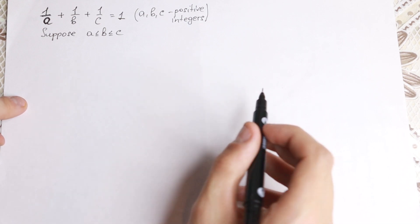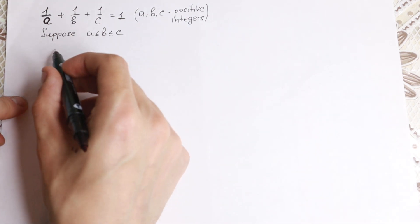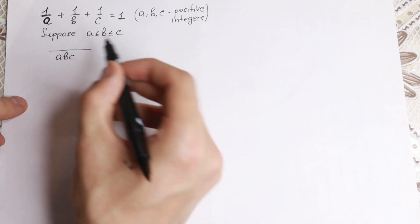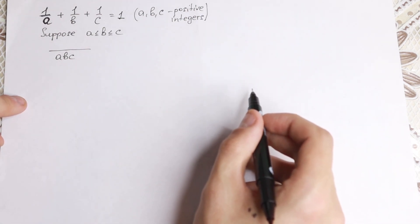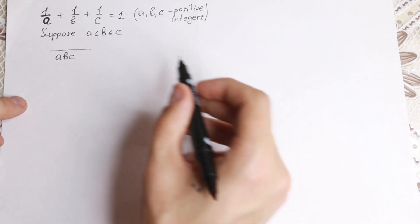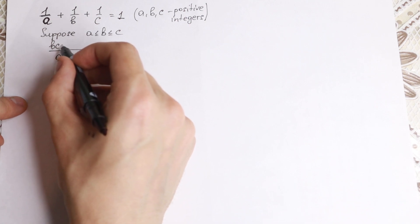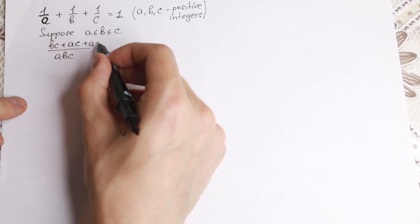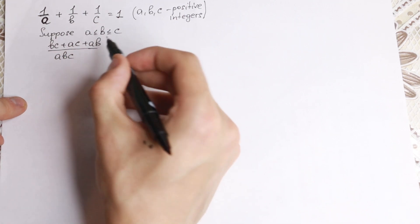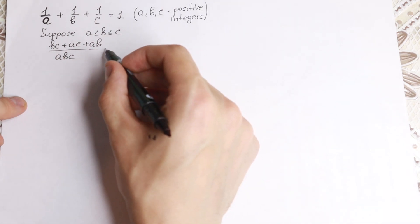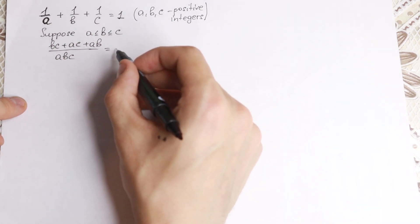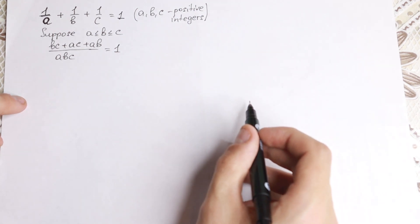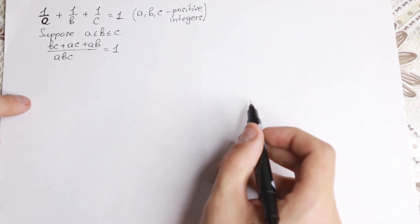So let's suppose that ordering and then find our common denominator. We'll have abc as the common denominator, and in our numerator we'll have bc + ac + ab equal to 1. We just found our common denominator.